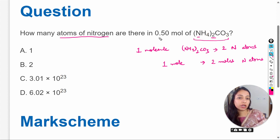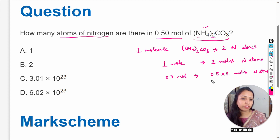Here in the equation, 0.5 mole is given of this molecule, so 0.5 mole will contain 0.5 multiplied by two moles of nitrogen atoms. 0.5 into 2 is equal to one mole nitrogen atom.